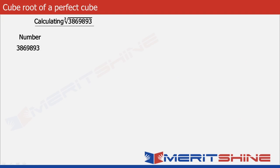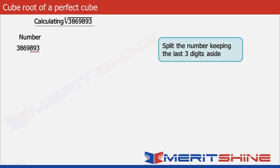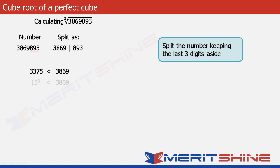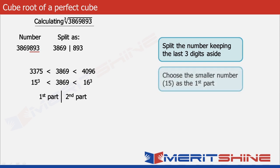Let us now take 3869893 as an example. The first step would be to split the number keeping the last three digits aside. So we'll get 3869 in the first part and 893 in the second. We observe that 3869 lies between 3375 which is 15 cubed and 4096 which is 16 cubed. The answer would be in two parts, and the first part gives 15.